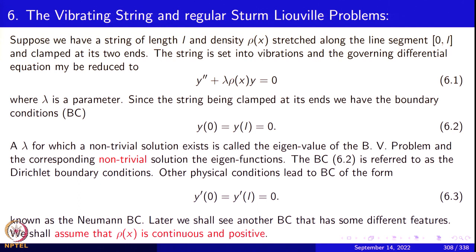Suppose we have a string of length L and linear density rho(x) stretched along a line segment 0 to L. The string is clamped at the two ends and set into vibrations. The governing differential equations can be written as y'' + lambda * rho(x) * y = 0. You start with the linear wave equation and separate variables as we did for the membrane, yielding equation 6.1. Lambda is a parameter. The string is clamped at both ends, so the boundary conditions are y(0) = 0 and y(L) = 0, equation 6.2.